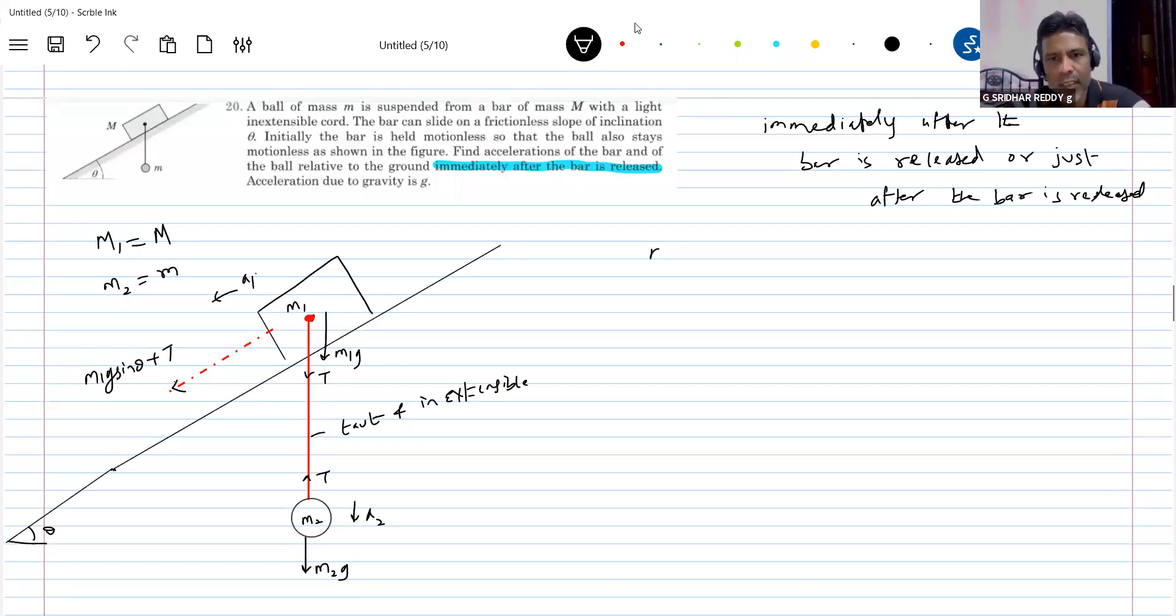So what is the acceleration? M1 A1 should be equal to M1G sin theta plus T. Oh sorry, this will be T sin theta. So there's one equation.